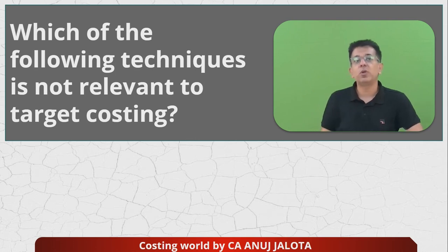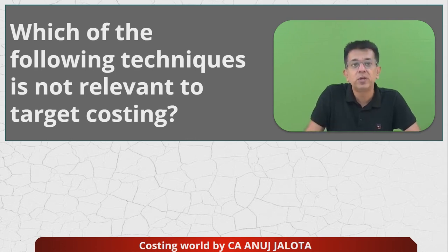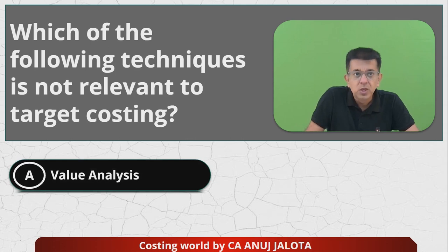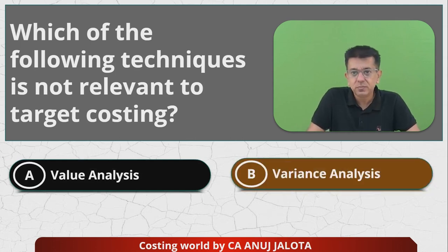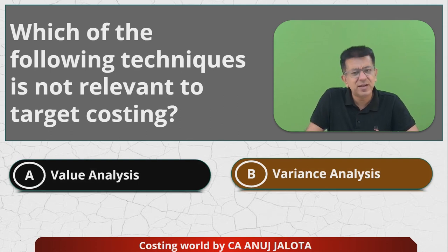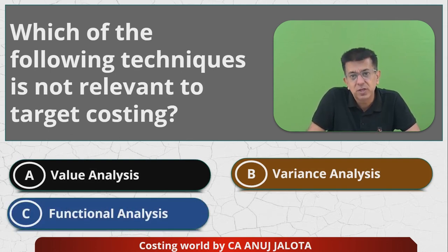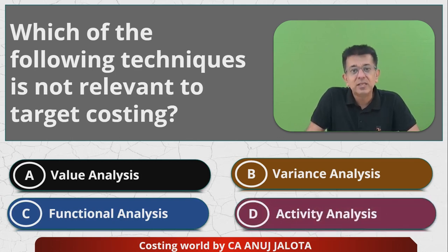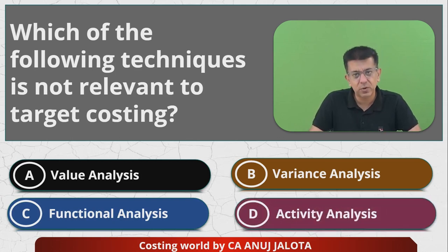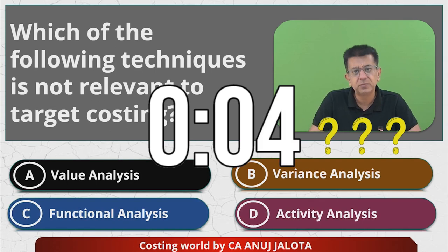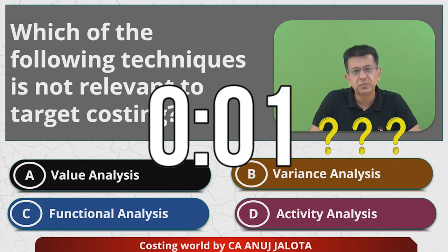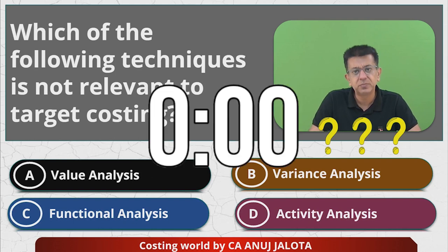So the question: which of the following techniques is not relevant to target costing? Option A is value analysis, option B is variance analysis — which you have done in standard costing — option C is functional analysis, and option D is activity analysis. If you know the answer, this is the time to comment on it.